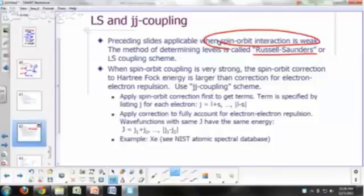But when spin-orbit coupling becomes very strong, the spin-orbit interaction becomes very strong, your correction to use the spin-orbit interaction will become much larger than the actual correction you would need to fully account for electron-electron repulsion.